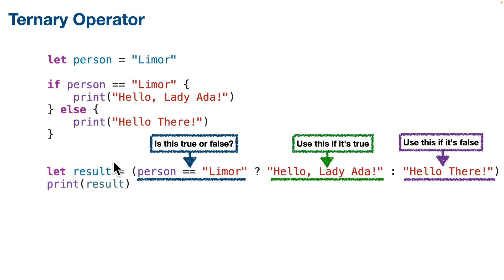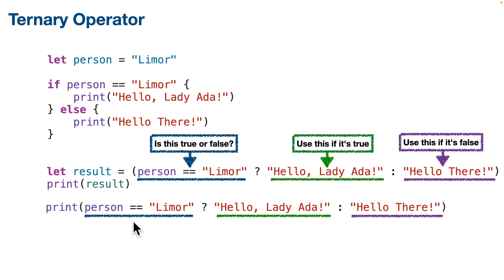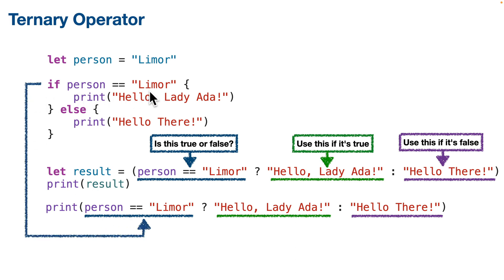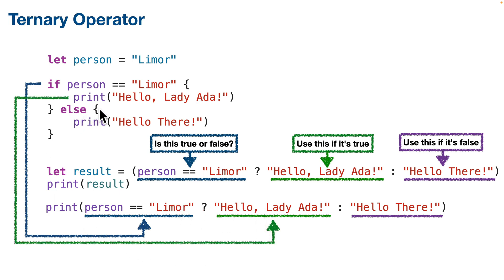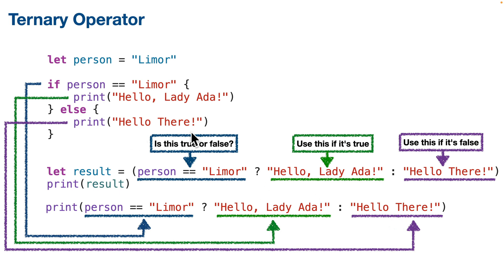We can absolutely write this all on one line. We print the result of first evaluating whether person equals 'lemore' — true or false — just like the if statement condition. If true, we send back what's after the question mark: 'hello lady ada,' just like the curlies after the if. If false, we send back what's after the colon: 'hello there,' just like the else clause. With the ternary operator it's all on one line using one print statement, not two. Remember: boolean — true or false — question mark — what to return if true — colon — what to return if false — and you've got it down cold.